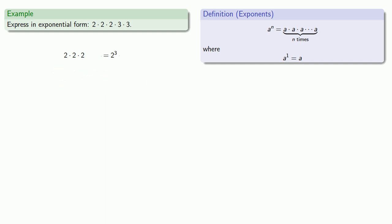We can't ignore the rest of the expression. This 3 times 3, there's 2 3s, so I can write that as 3 to power 2.